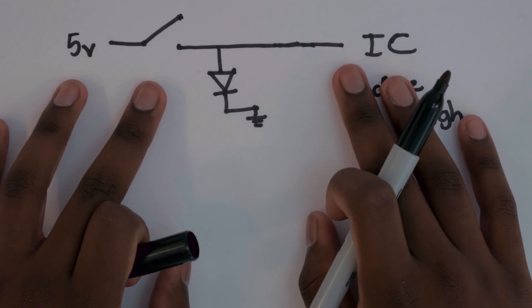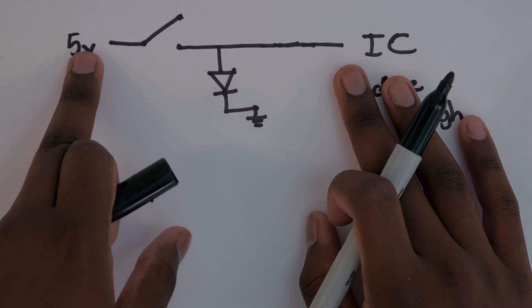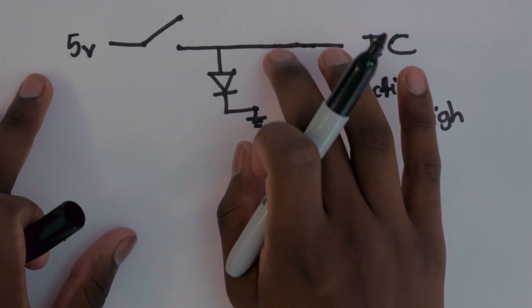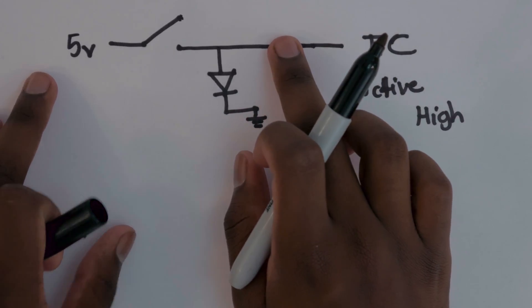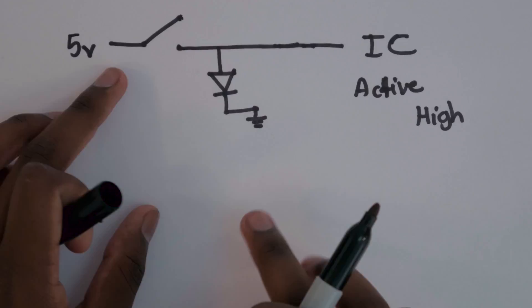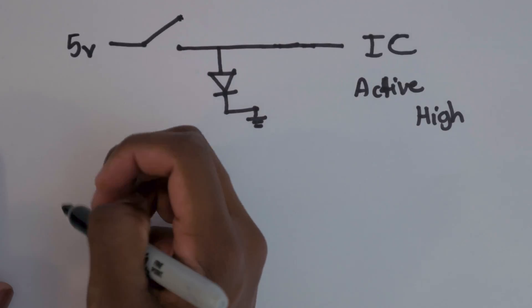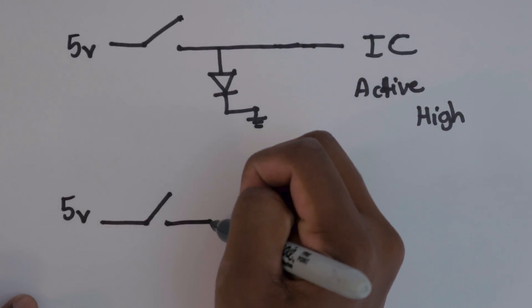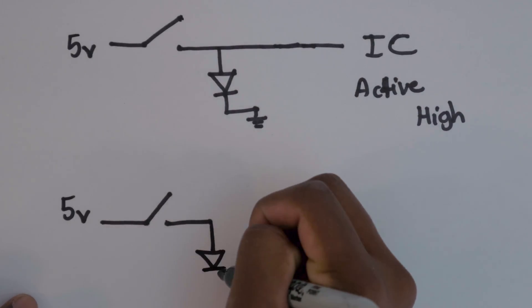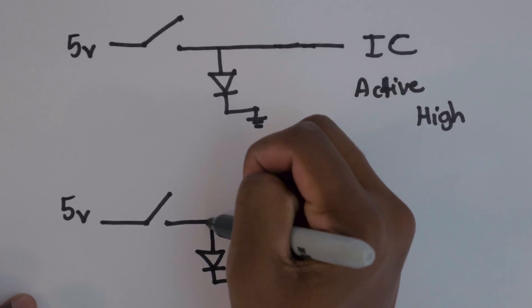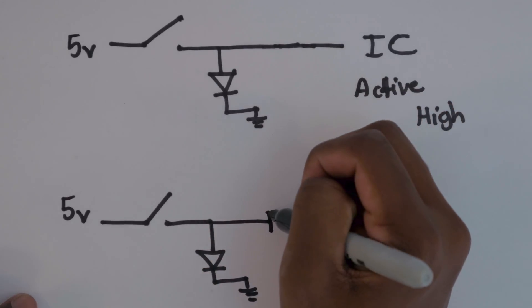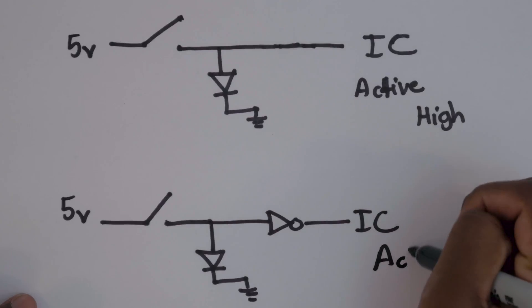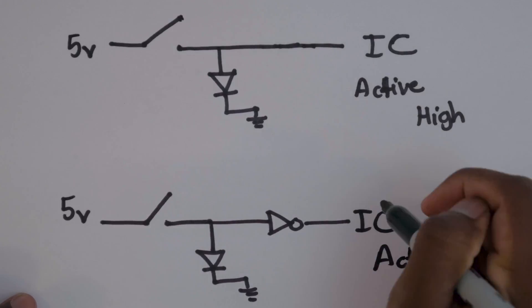If it's an active low signal, what we need to do is say when there's 5 volts here and this LED turns on, we actually want a 0 here, and we're going to do that by placing a NOT gate right here in between the switch and the IC. So we're going to have 5 volts go through the switch, and the LED is going to act in exactly the same way. This part of the circuit is the same, only this part is different because we're going to have it go through a NOT gate and then go to the IC. This is going to be for an active low IC signal.